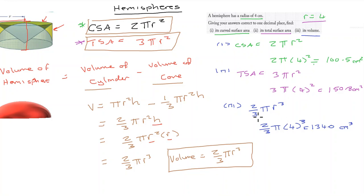You could be given information and need to manipulate the formula to figure out other unknowns — you might get asked the reverse question, for example. It's important that you know the formulas and can work with and manipulate them. So that covers the curved surface area, total surface area, and volume of hemispheres. Thank you.